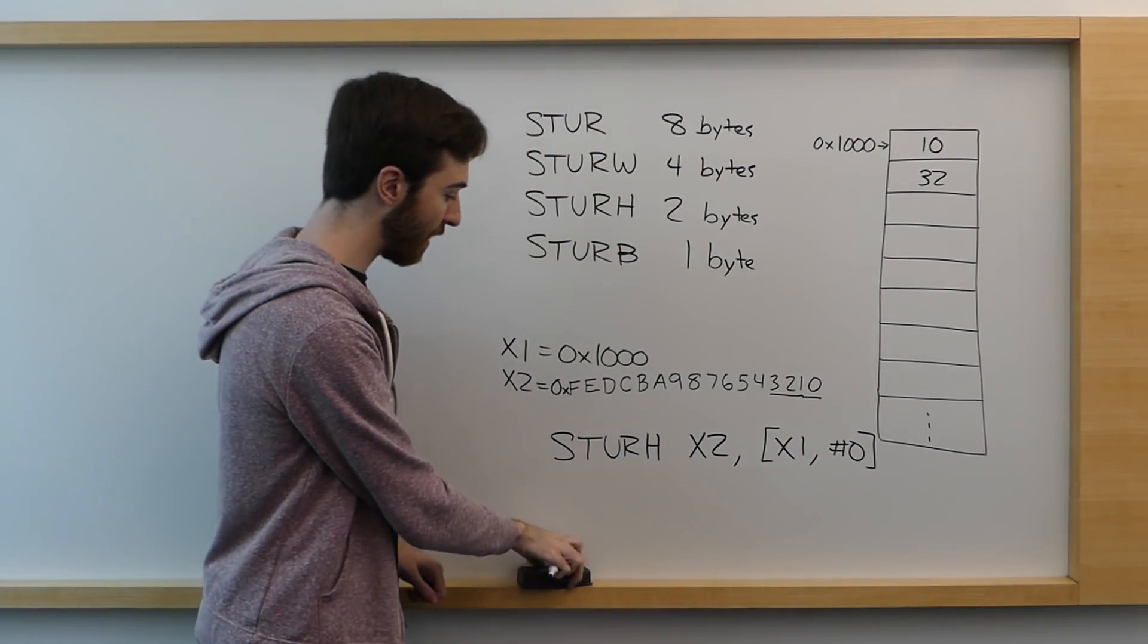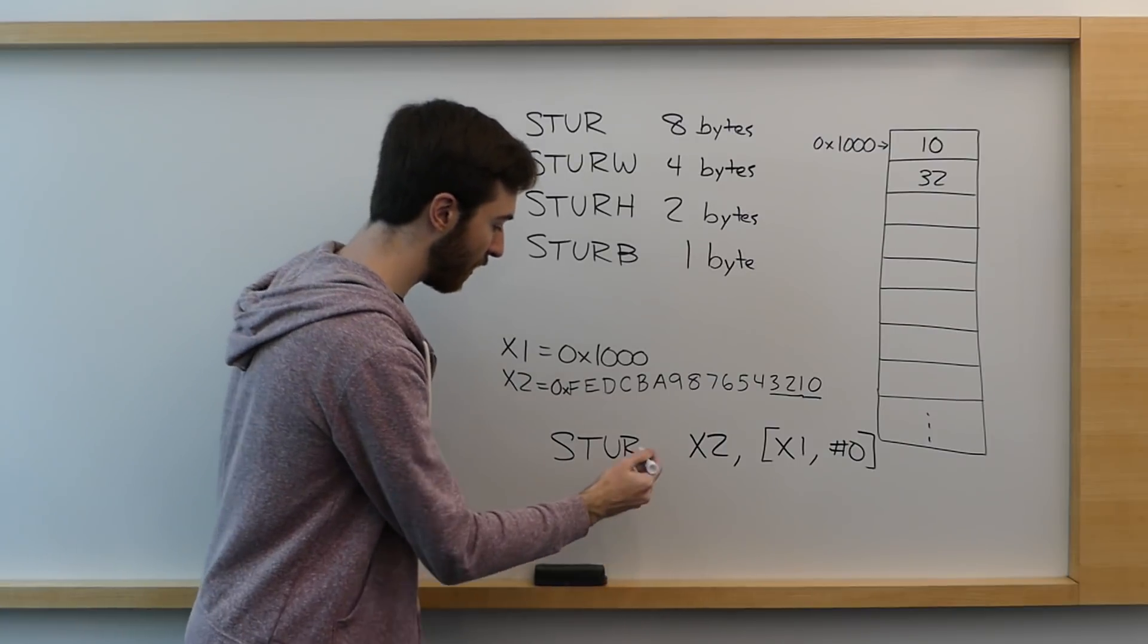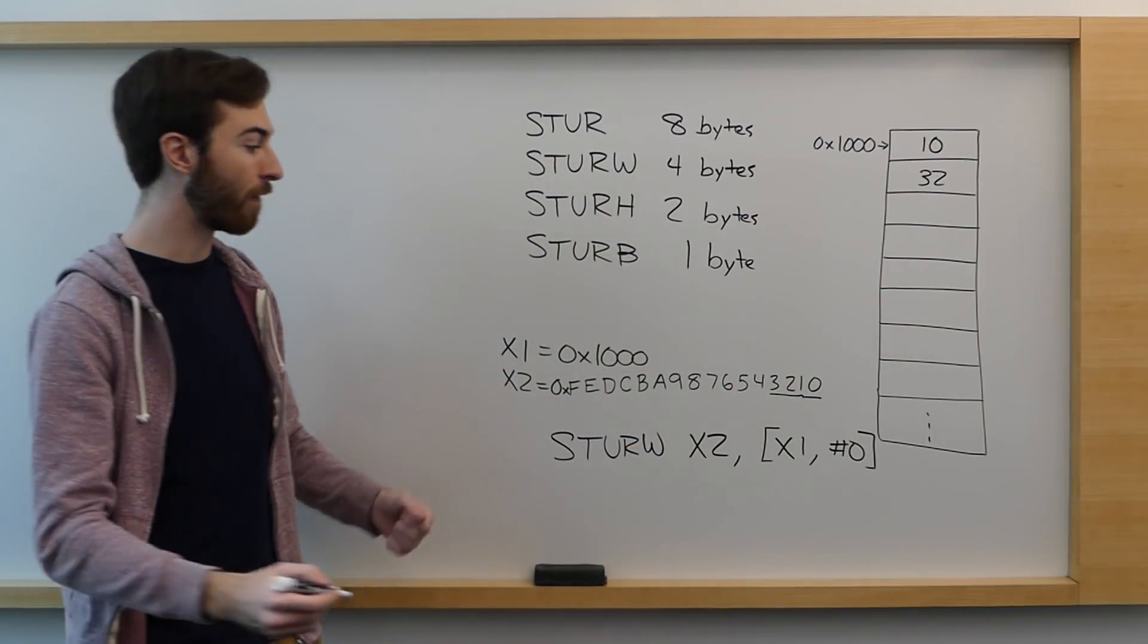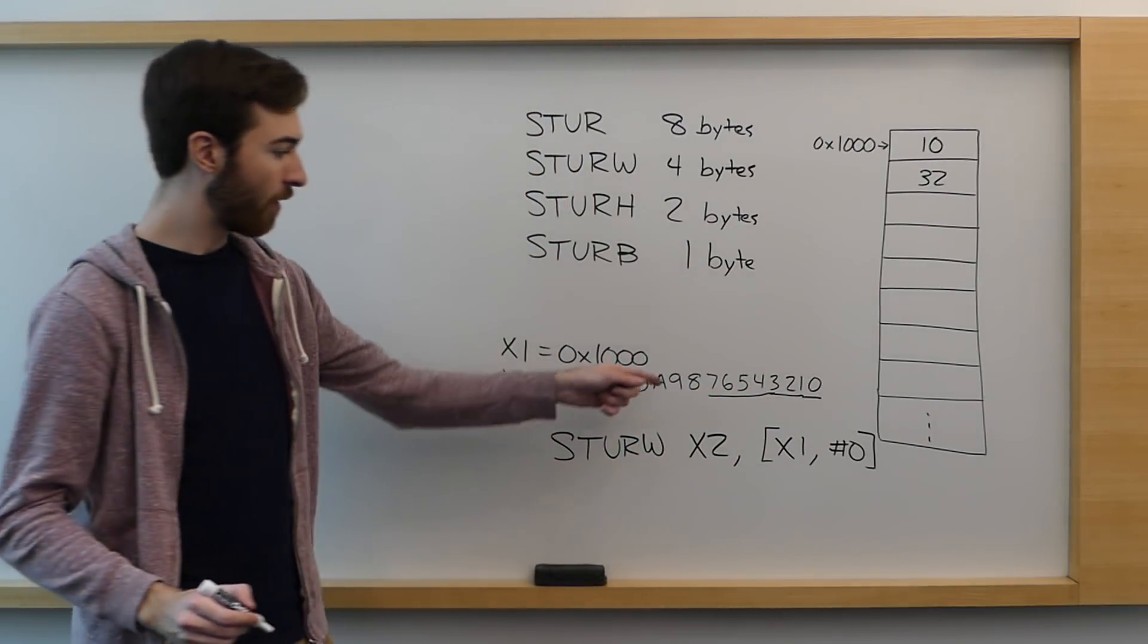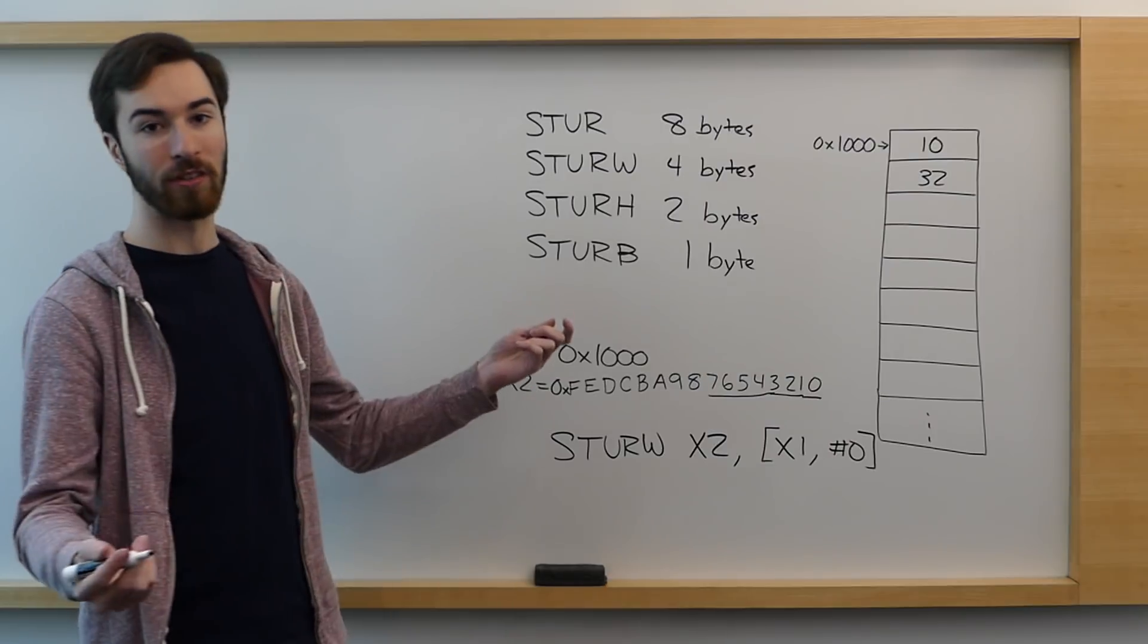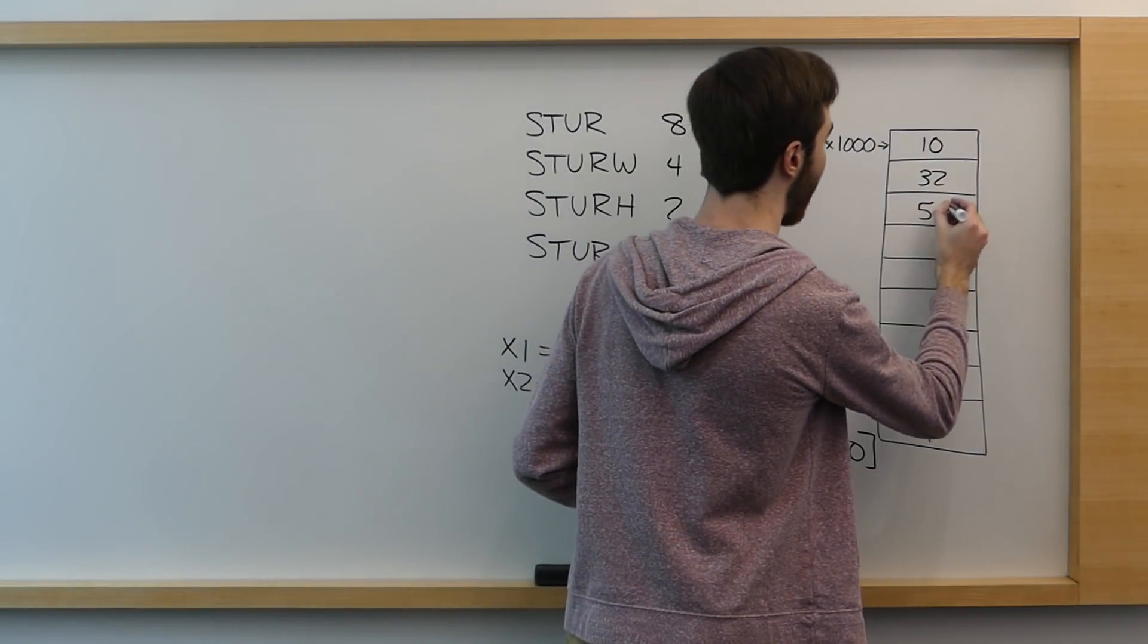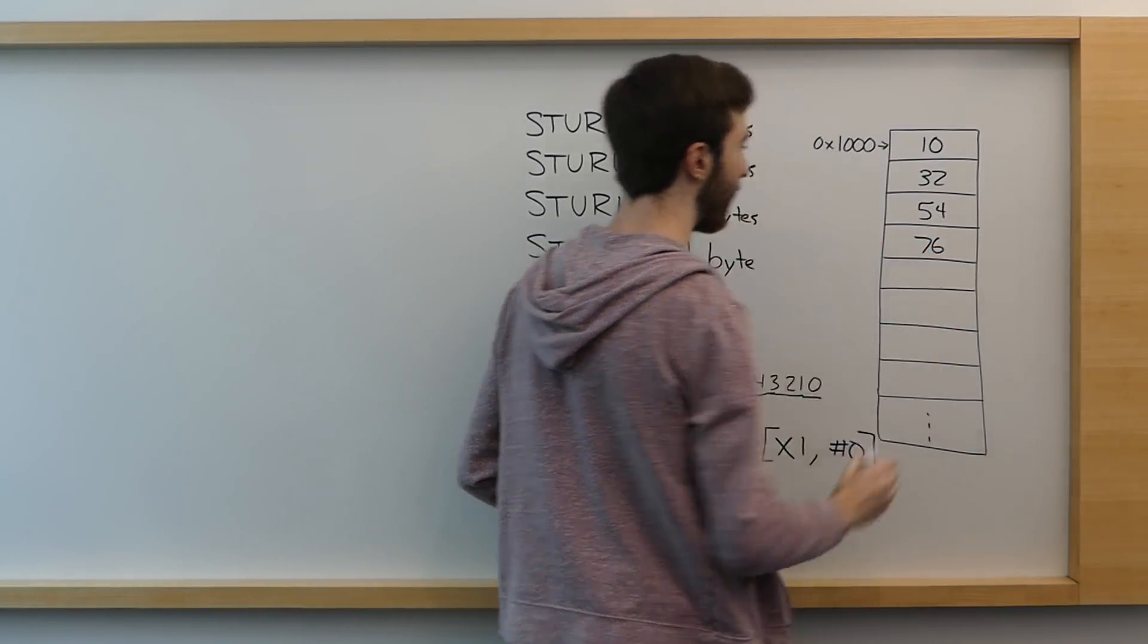It's still the same offset, so we still start at 1000. And let's assume that this is a little endian system, so the least significant bits will go into the smallest memory address. In this case, we would now store 32 as well and leave everything else as it was.